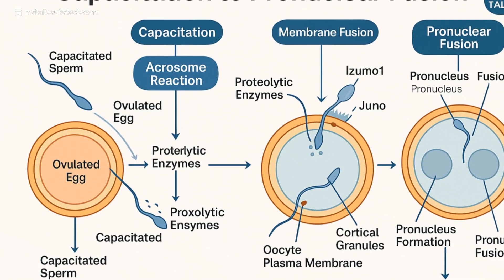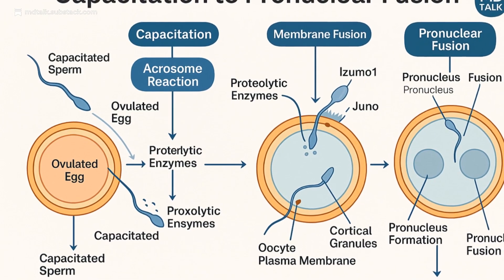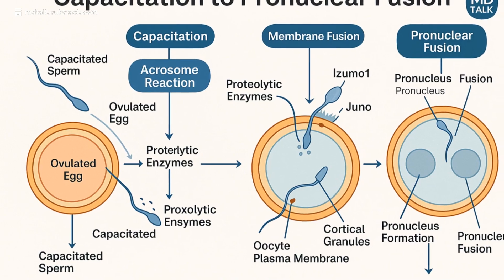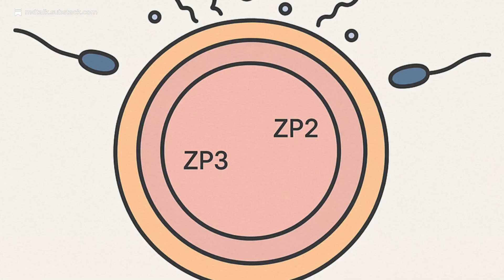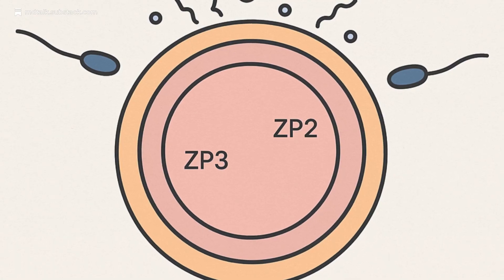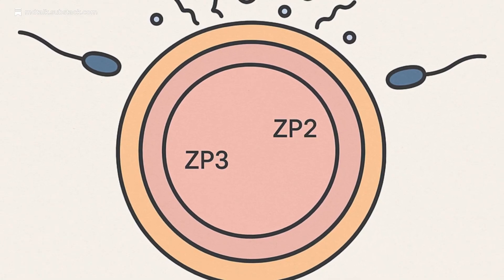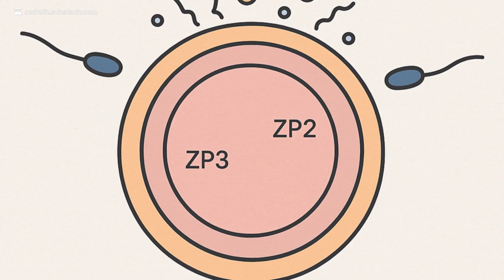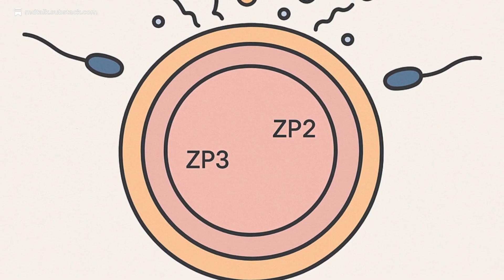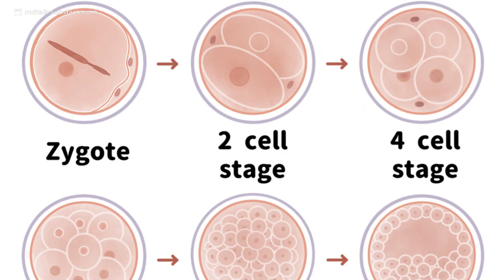To prevent polyspermy, cortical granules release enzymes that harden the zona. ZP2 and ZP3 are modified — no second chances for sperm.